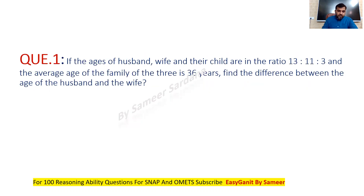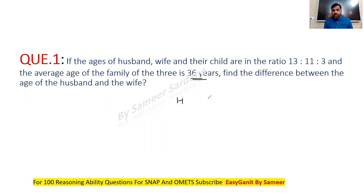Here is question number one. It says that ages of husband, wife and their child are in the ratio of 13:11:3 and the average age of the family of three is 36 years. Find the difference between the age of the husband and the wife. This is a basic question to help you understand the basics of ratio, and the level of difficulty of SNAP is more or less similar to this type of question. The age ratio is 13:11:3.